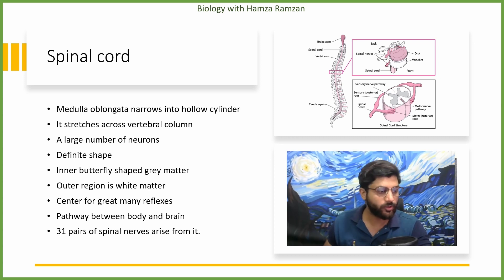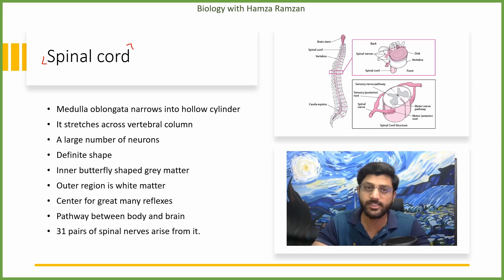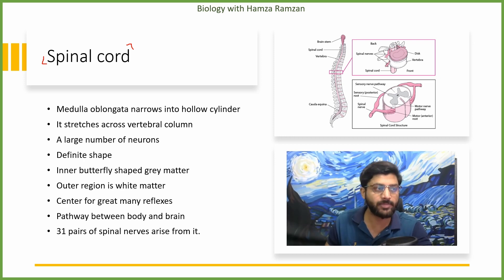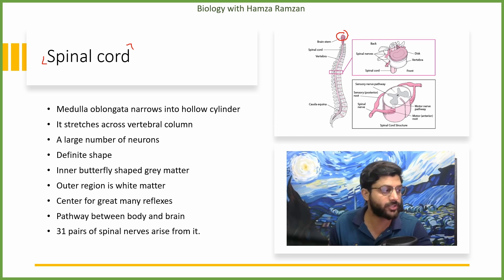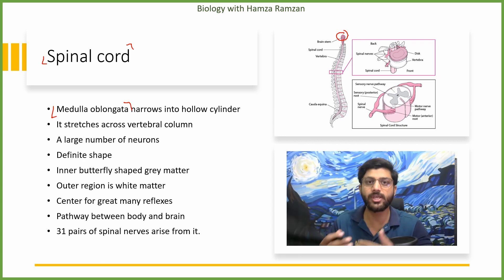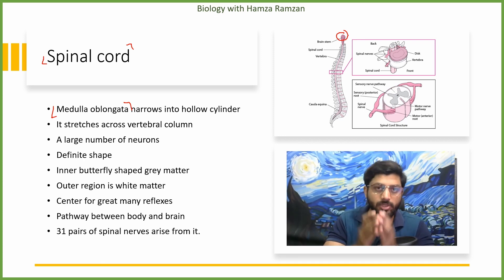Welcome to this class. We're going to talk about the spinal cord. The first thing is which part of the brain stem narrows down to form the spinal cord — that is the medulla oblongata. The hindbrain is the end part which narrows down, and the spinal cord is housed within the hollow cylindrical structure of the vertebral column.